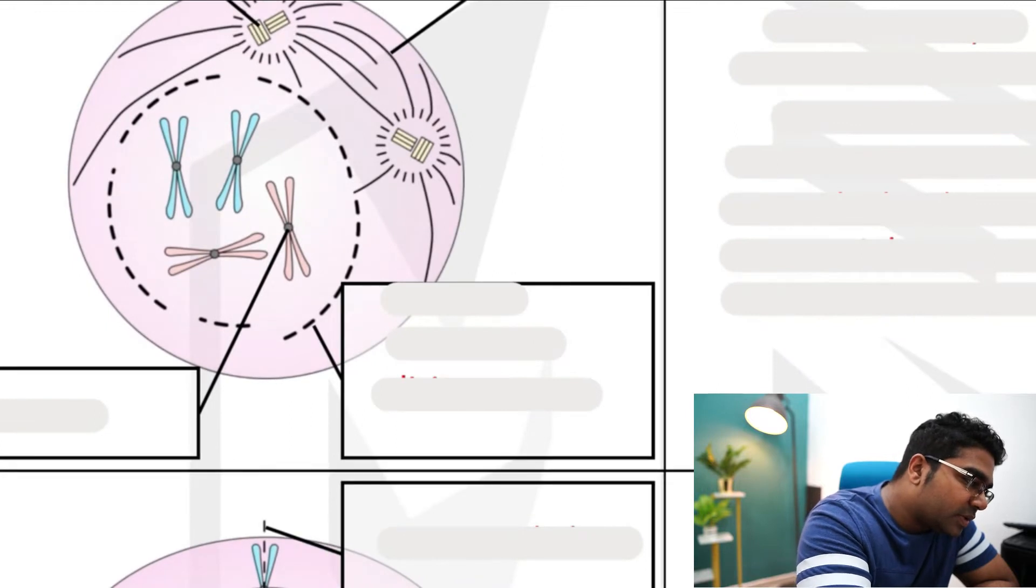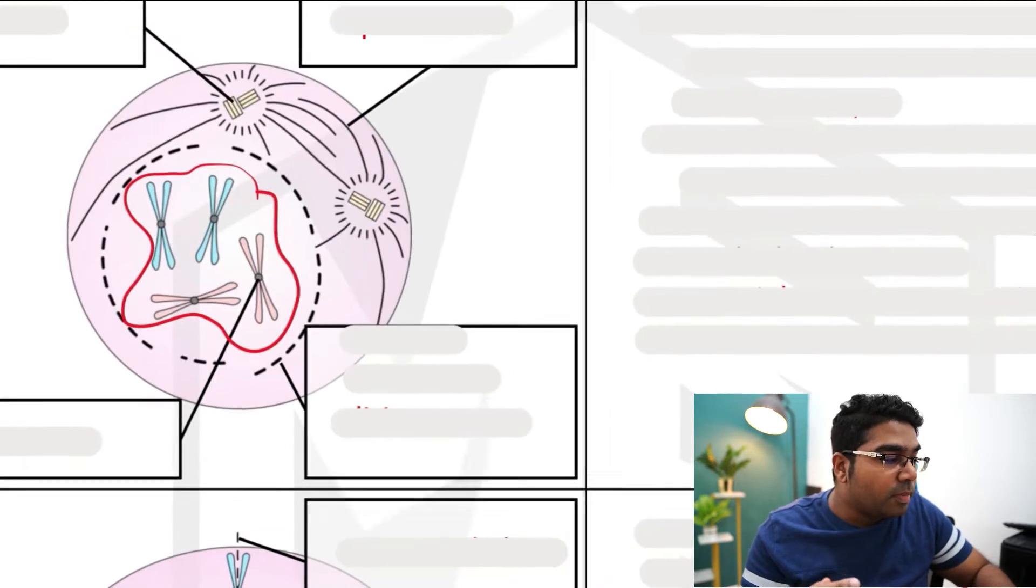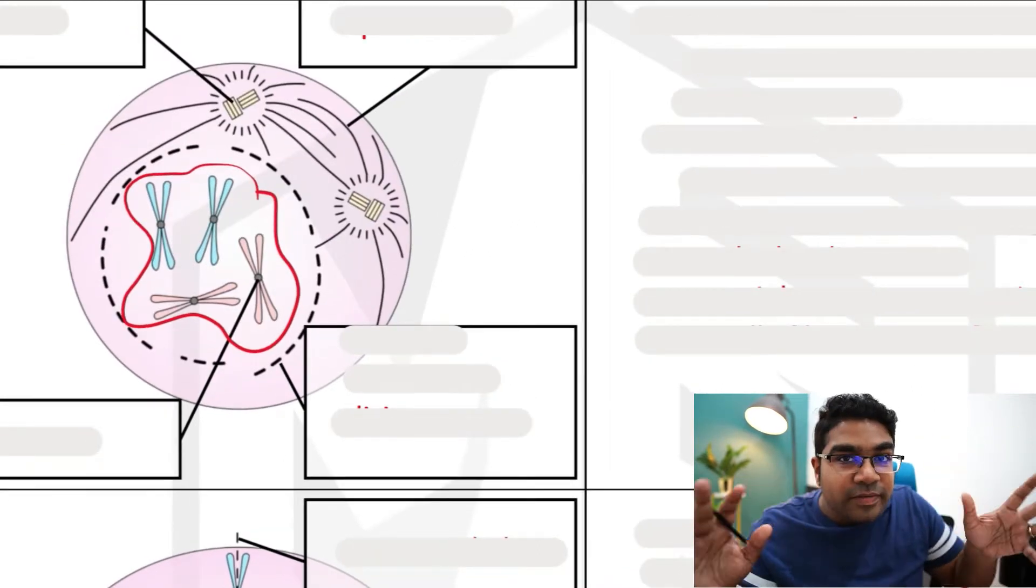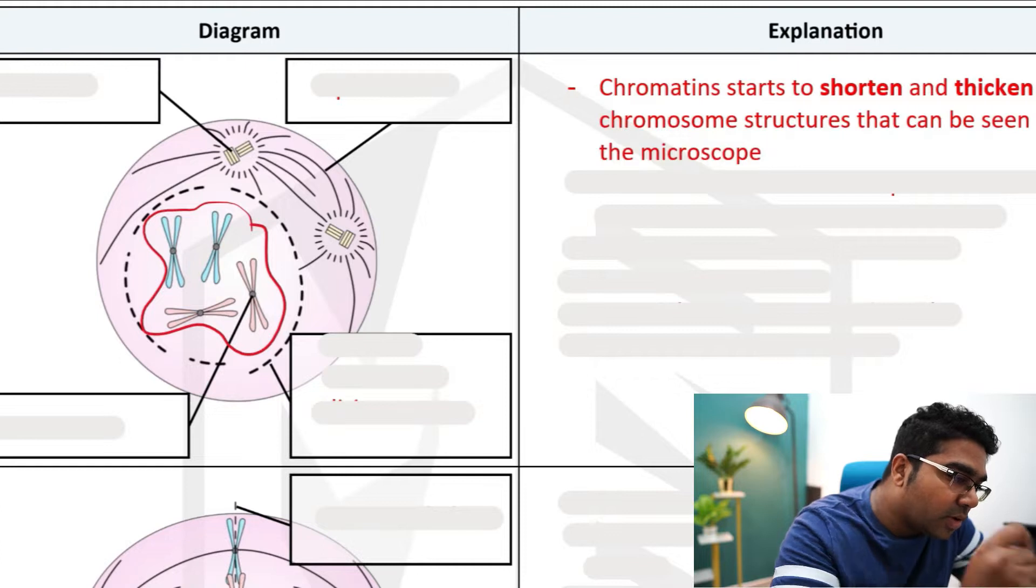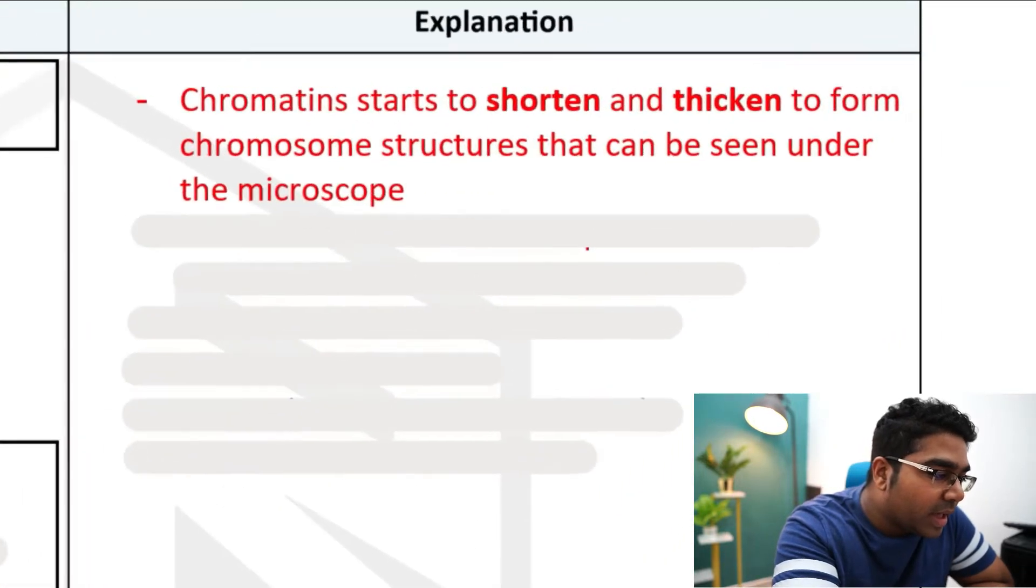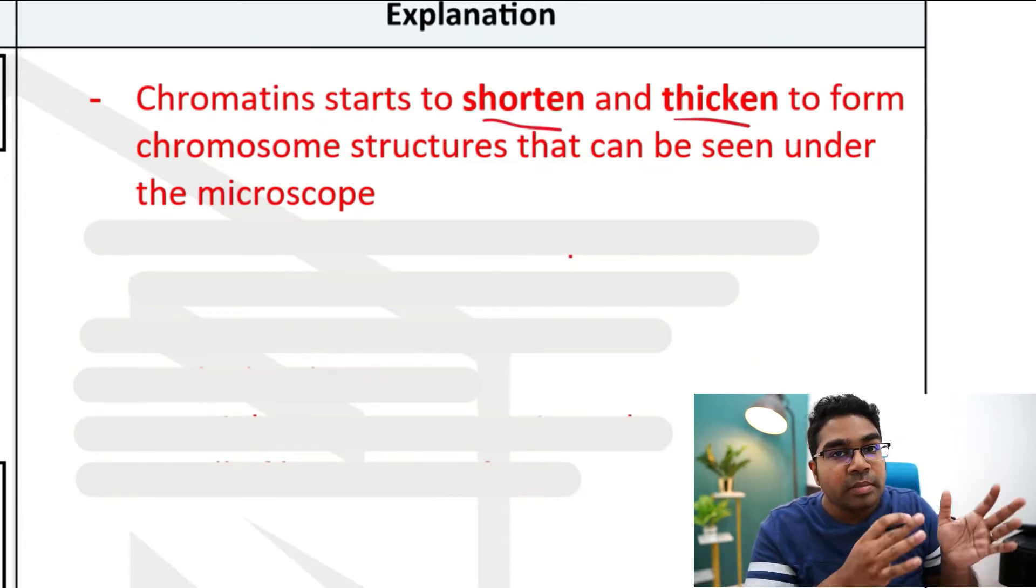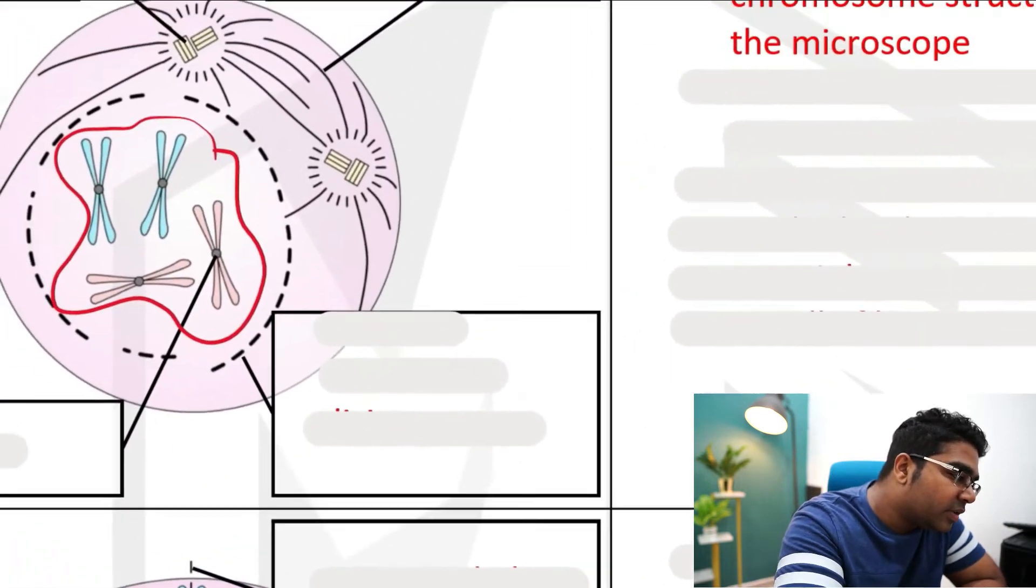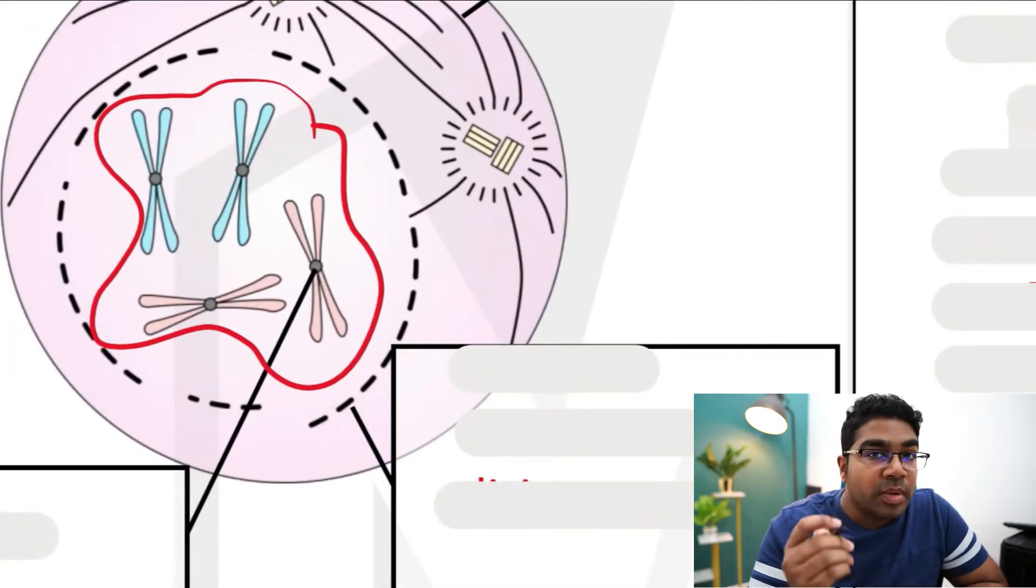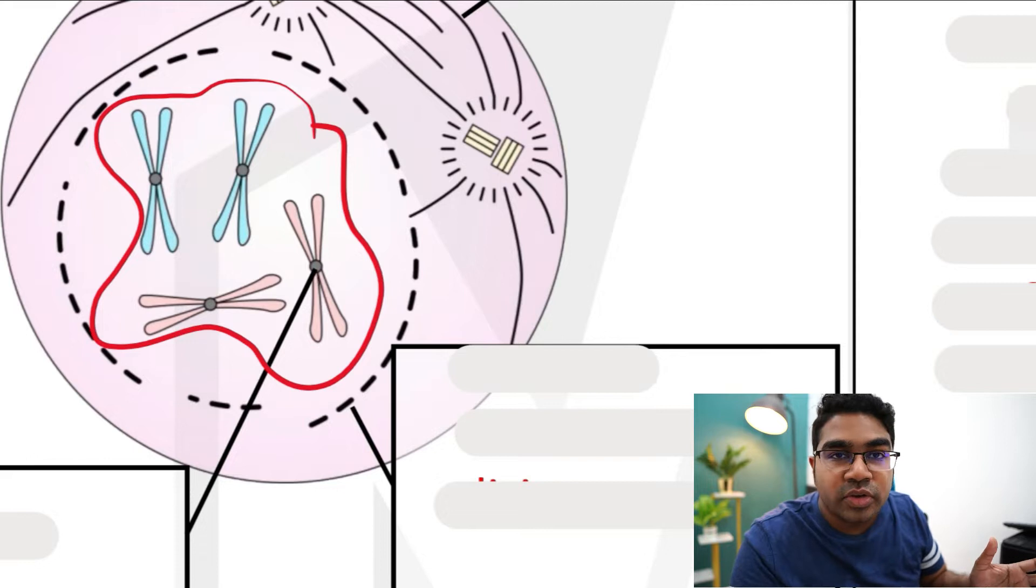The first thing you will notice is these x-shaped things, the chromosomes, but these chromosomes don't always look like this. Before prophase they are in a fine thread form called chromatin, but during prophase the first thing that happens is these chromatins start to shorten and thicken to form chromosome structures that can be seen under the microscope. Before this they are too fine to be viewed, and then they become the x-shaped that we are so familiar with. Remember that chromatins themselves are already chromosomes; they just form this shape during prophase.